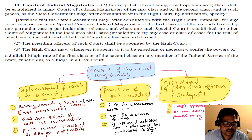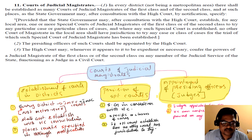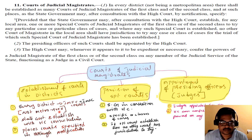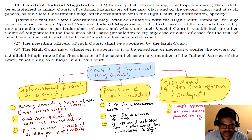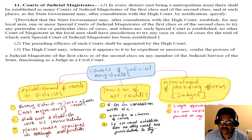Every district should have at least one JMFC court and one JMSC court. This district provision does not apply in metropolitan areas — metropolitan areas will have metropolitan magistrate courts instead. So there is no conflict. The district means non-metropolitan area. If it is a metropolitan area, then instead of JMFC, there will be a metropolitan magistrate court.